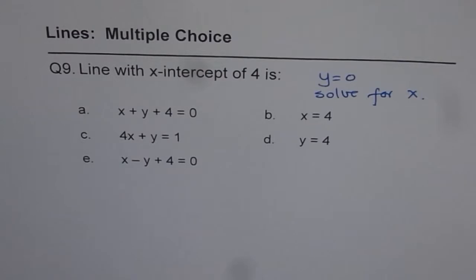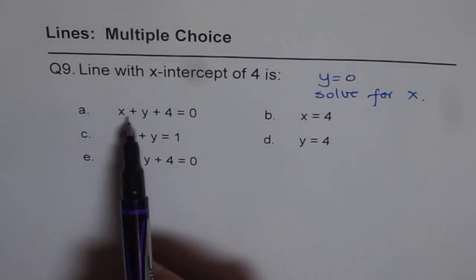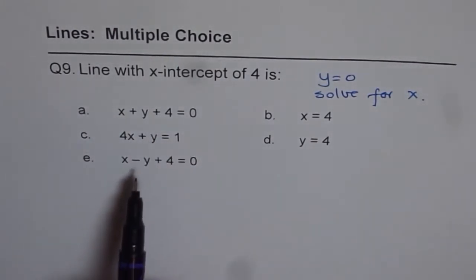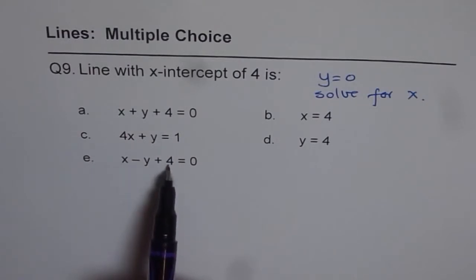Now, this question is kind of interesting in that if you do y equals to 0, you get x equals to minus 4, not plus 4. y equals to 0 gives you 1 over 4. y equals to 0 gives you x again minus 4.